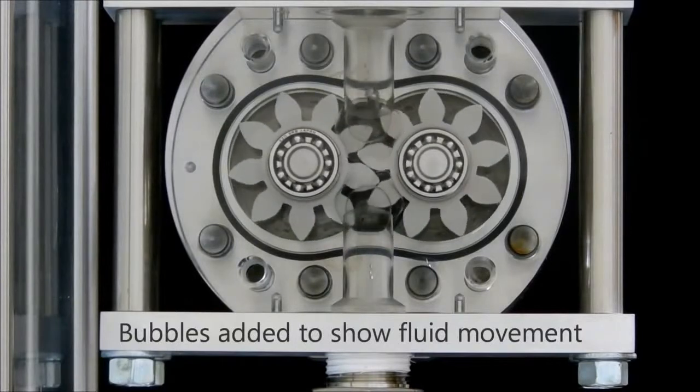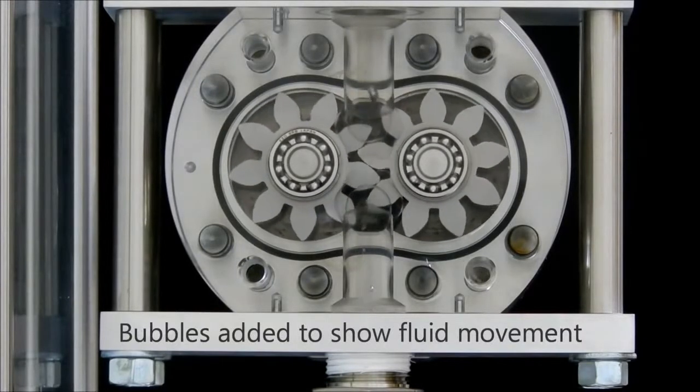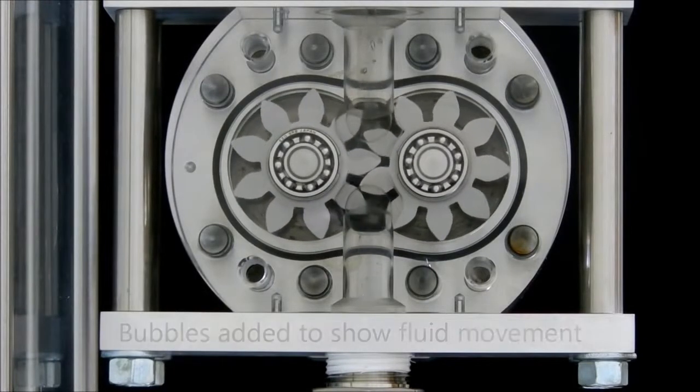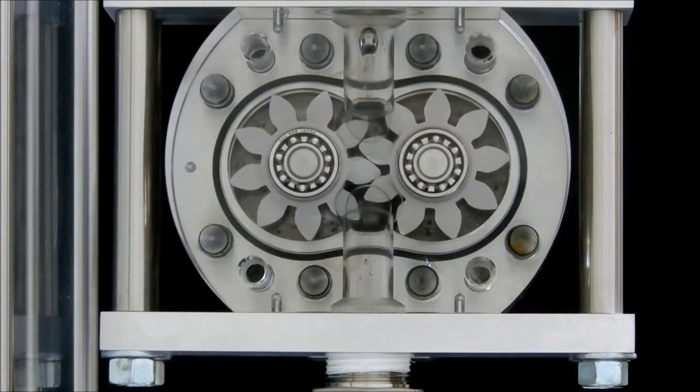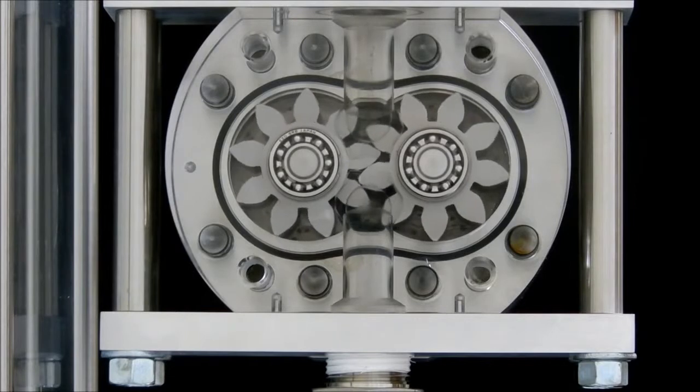As liquid pushes against the gear teeth, the gears progress and isolate a volume of fluid. As liquid continues to enter the meter, the trapped portion of fluid is carried along by the gears until the fluid is released into the downstream side of the meter.